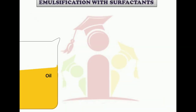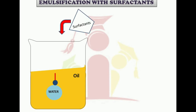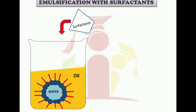Now, emulsification with surfactants. Suppose we have an oil-filled beaker and we want to add some water molecules to it to make a mixture. But as water is not soluble in oil, the mixture is immiscible. When we add surfactants to it, the hydrophilic head attaches to the water molecule and the hydrophobic tail remains in the oil phase. Slowly, micellar formation occurs and the water molecule becomes soluble in the oil, making it a water-in-oil emulsion.